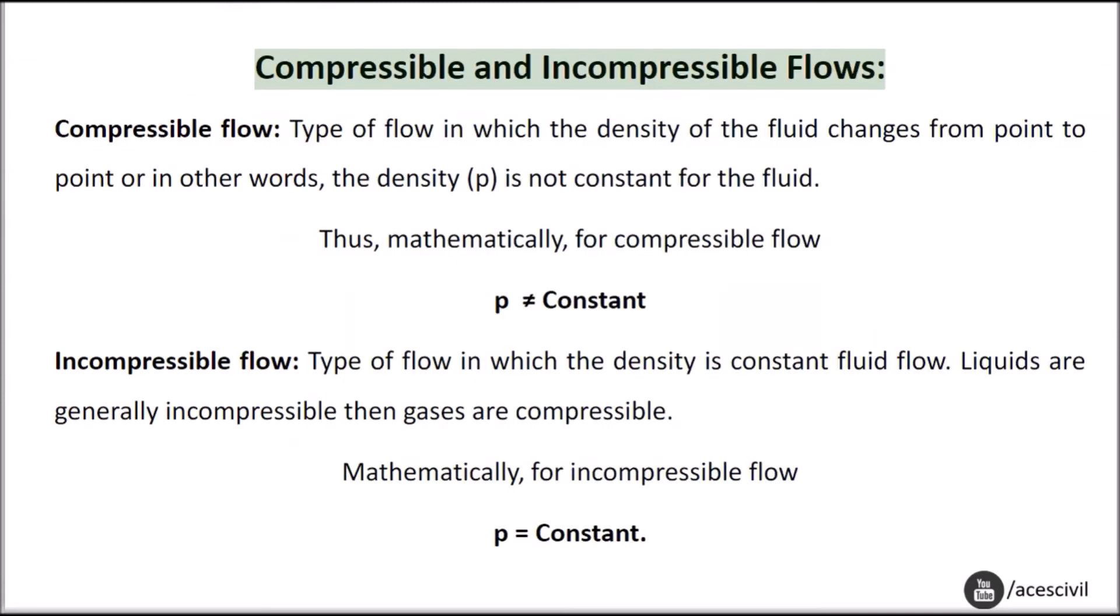Compressible and incompressible flows. Compressible flow is a type of flow in which the density of the fluid changes from point to point or in other words, the density ρ is not constant for the fluid. Thus mathematically, for compressible flow ρ ≠ constant. Incompressible flow is a type of flow in which the density is constant. Liquids are generally incompressible while gases are compressible. Mathematically, for incompressible flow ρ = constant.